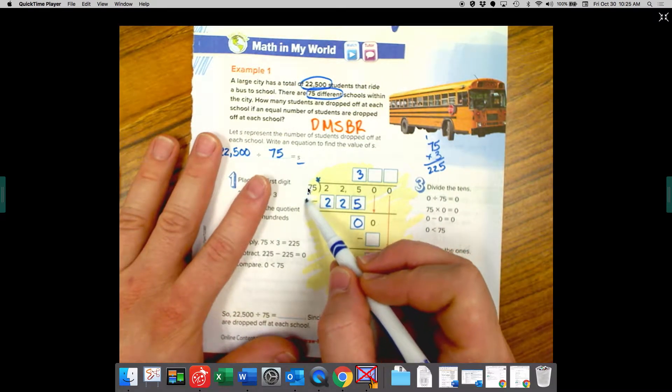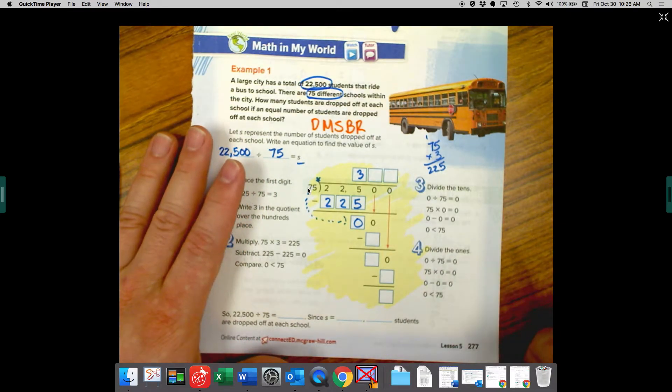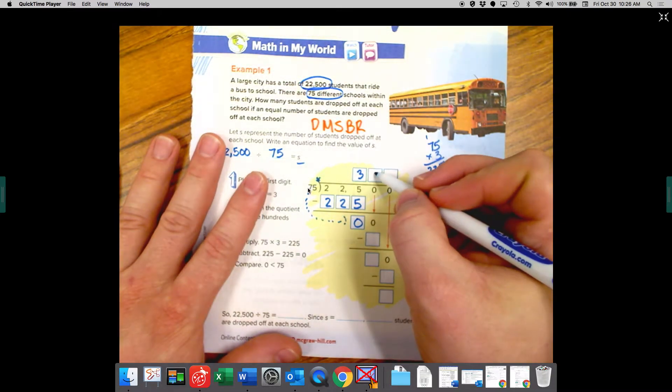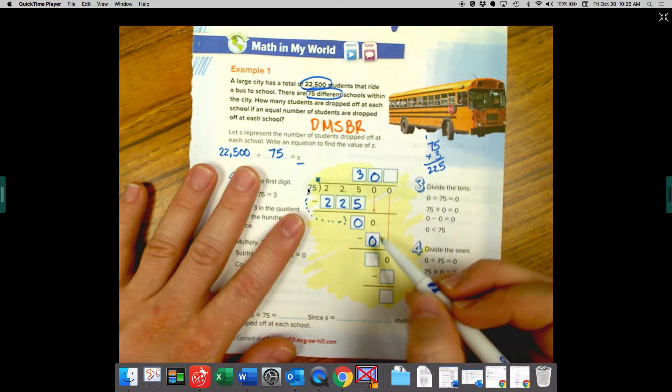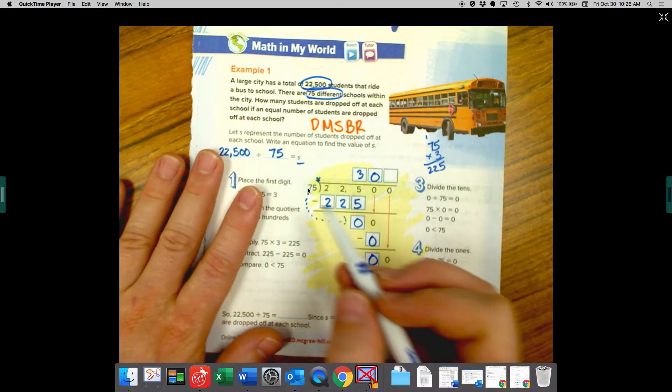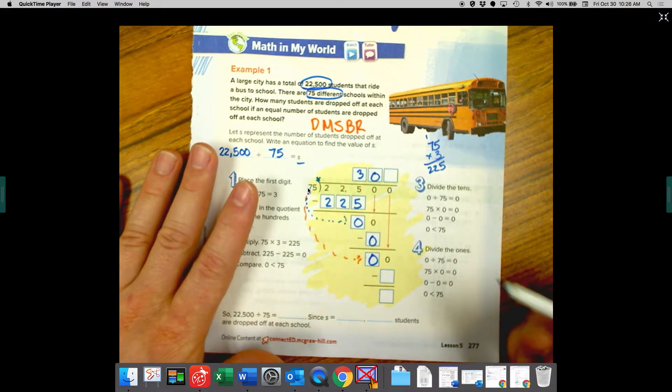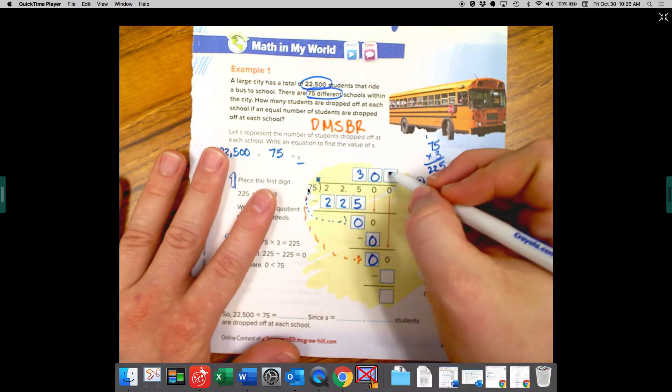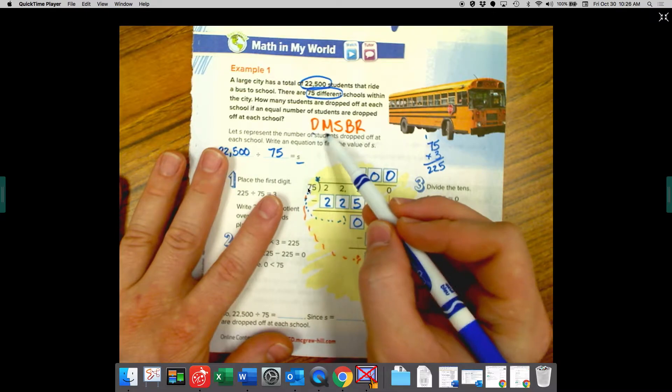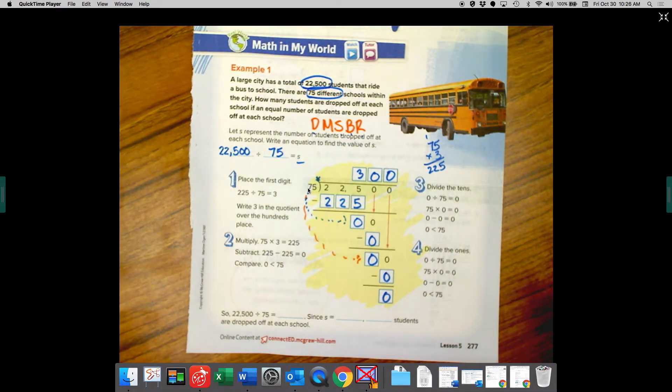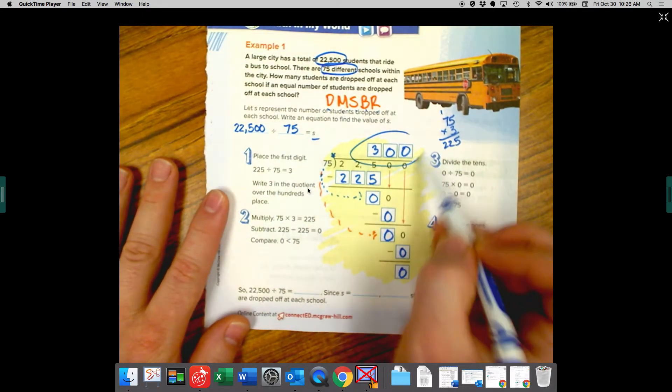So now we're going to ask ourselves, how many times does 75 go into 0? Well, 75 times what gets me 0? 0. This one's brought down. So we're going to minus 0 here. 0 minus 0 is 0. Now we ask ourselves one more time, 75 into 0, which does not fit. So 75 times 0 is 0 and 0 minus 0 is 0. We follow the steps, divide, multiply, subtract, bring down, repeat, or that is our remainder. So our final answer is 300.